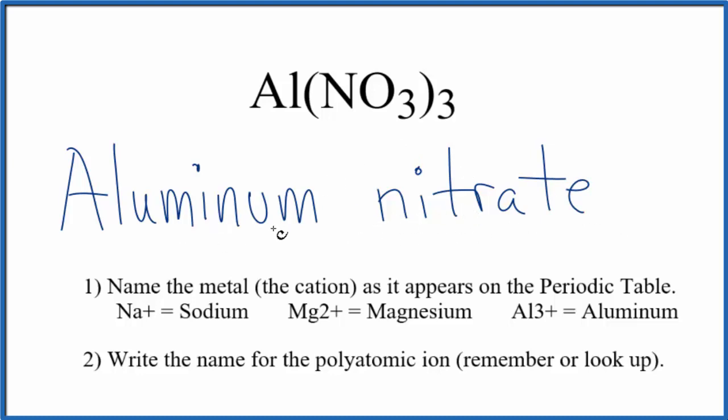If you're given the name and asked to write the formula, you need to recognize that aluminum always has a 3+ ionic charge, and the whole nitrate ion has a 1- charge.